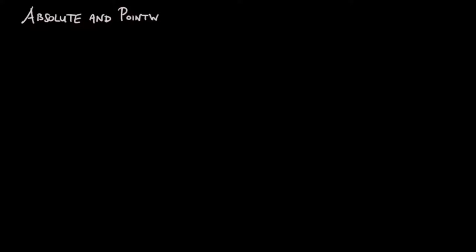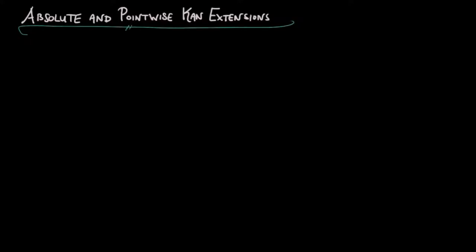While Kan extensions are defined up to universal mapping property, in general they are not well behaved. In this video, we discuss two types of Kan extensions, called absolute and point-wise, which have nicer properties.